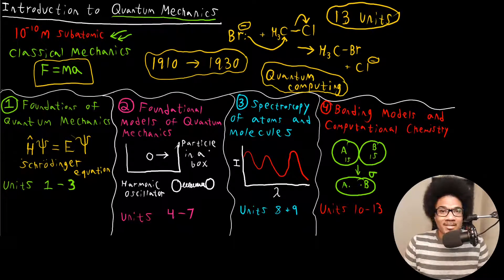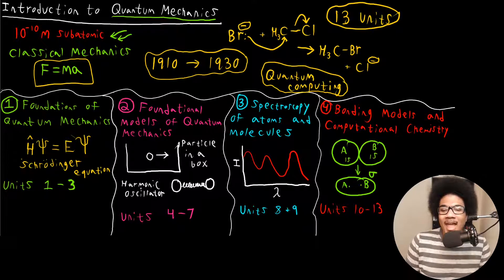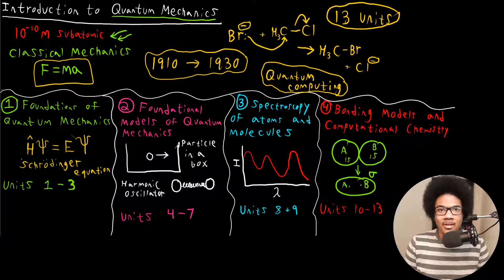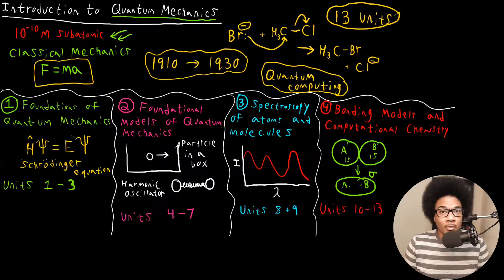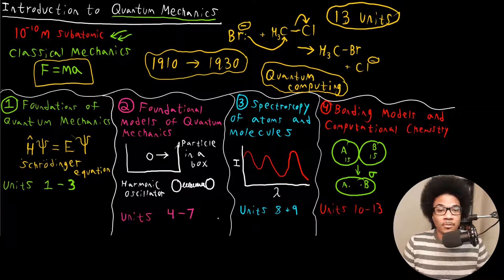So some of these models I've sketched out here. One is a particle in a box, which is a model of translational motion of particles, and a harmonic oscillator, which is a model of the vibrational motion of particles. We're going to cover about four of these key models: a particle in a box, harmonic oscillator, rigid rotor, and the hydrogen atom. And those will be covered in units four through seven.